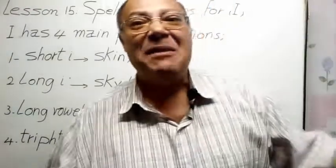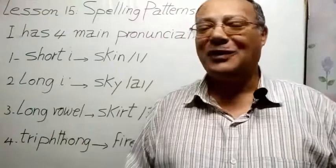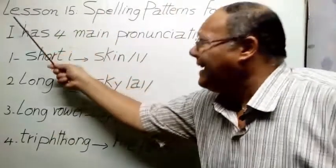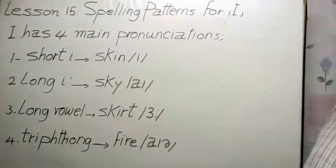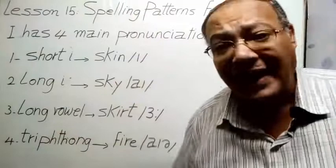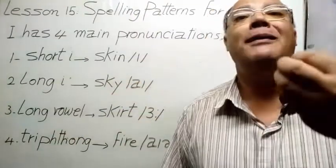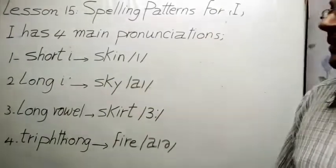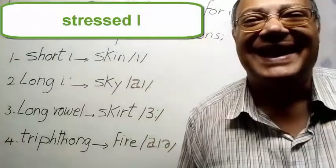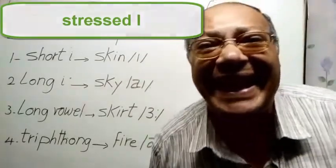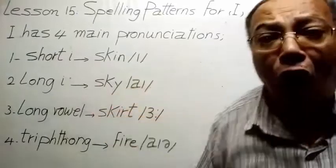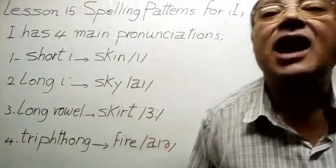In the name of God Almighty, hello everybody, how are you? I hope you're quite well. Lesson 15: spelling patterns for I. I has four main pronunciations. Short I is skin, long I is sky.